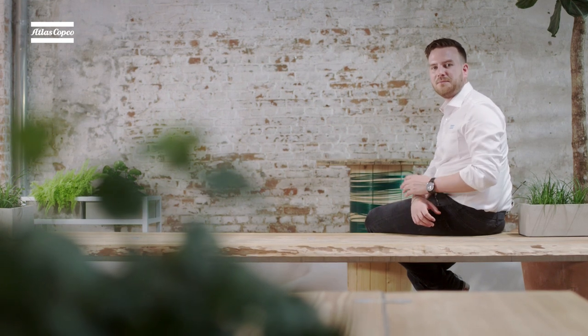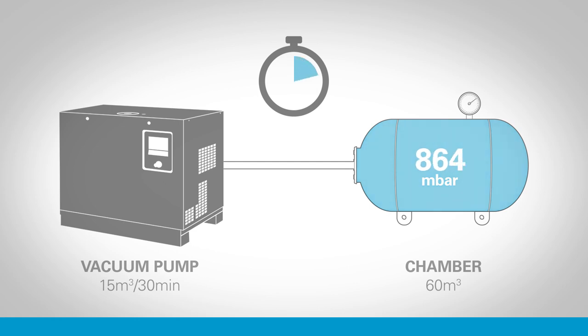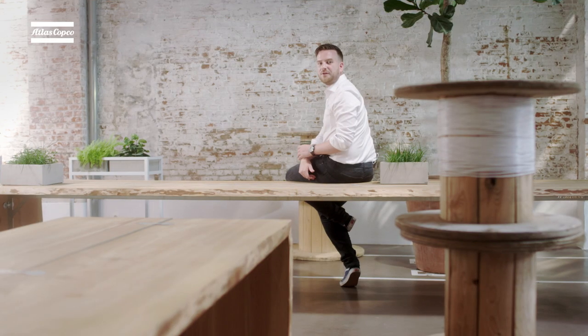Now imagine a similar pump but instead of one single 30 meter cubed stroke, it has two strokes of 15 meter cubed every half hour. The first stroke will remove 15 meter cubed of gas and reduce the pressure by 25% to 750 millibar. The second stroke will then remove 25% of only the remaining gas, leaving the pressure at 75% of 750, which is 563 millibar. The natural log function in the equation accounts for the difference between instantaneous work and gradual incremental work.